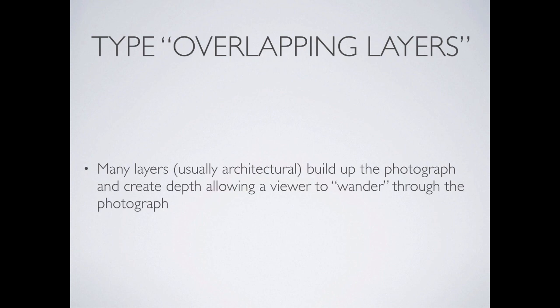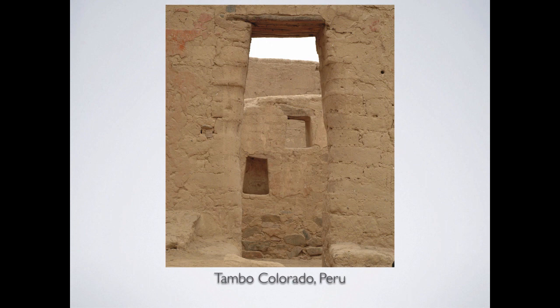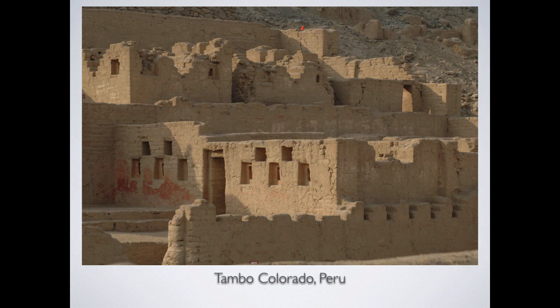Overlapping layers is a technique architects and landscape architects really like, where one element frames another that frames another, working your way back through depth. This was that mud site in Peru — far less exciting than stone buildings, but it had some of the best preserved Inca paintings. You have a door that leads to a wall with windows that leads to another wall, so you're working through layers. Obviously shot at one end of the day — you can see the deep shadows in the recesses, not a noon shot.